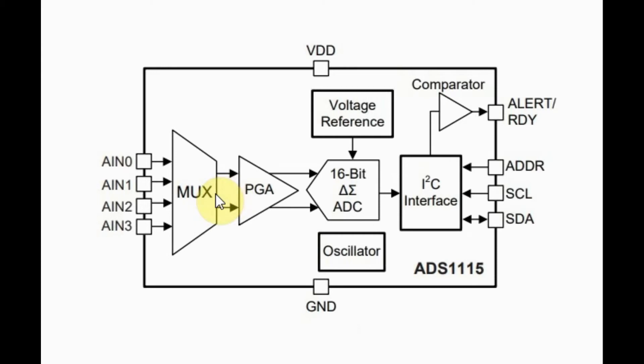The analog signal output from the multiplexer is then fed into a programmable gain amplifier, which enables the ADS-1115 to accept different input ranges, starting from plus or minus 256 millivolts up to plus or minus 6.144 volts.